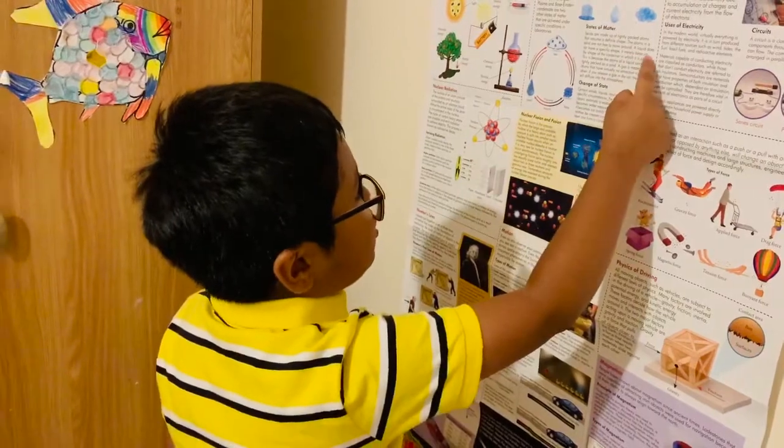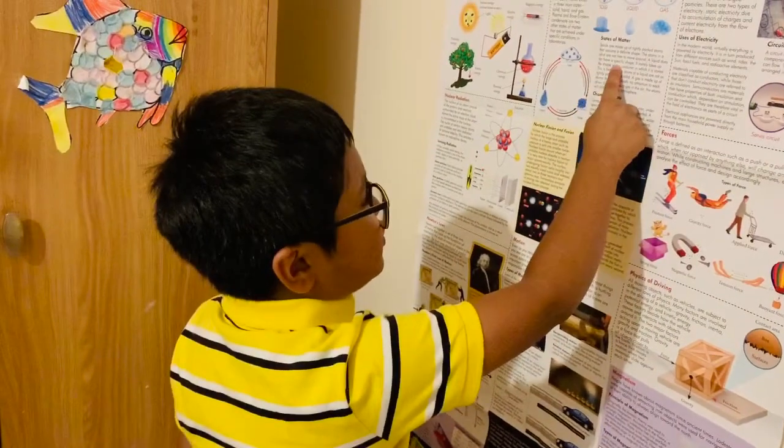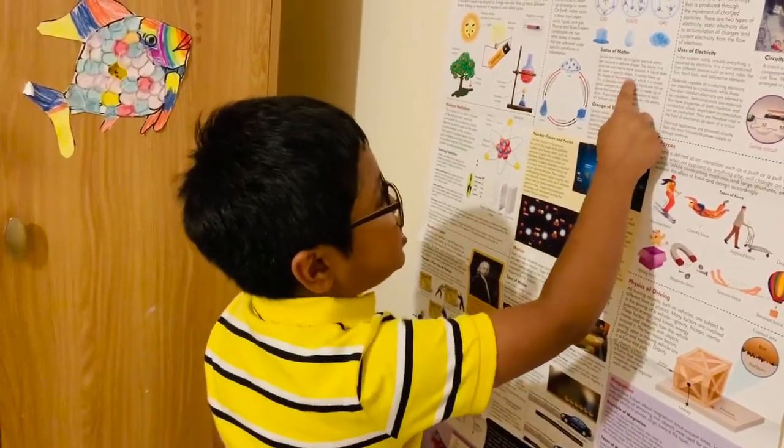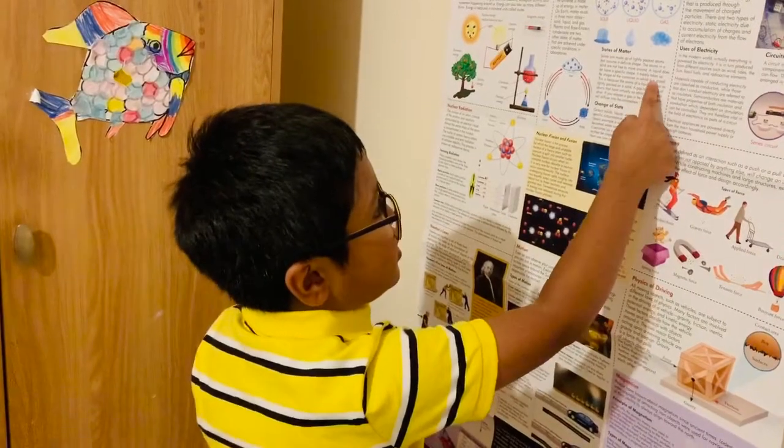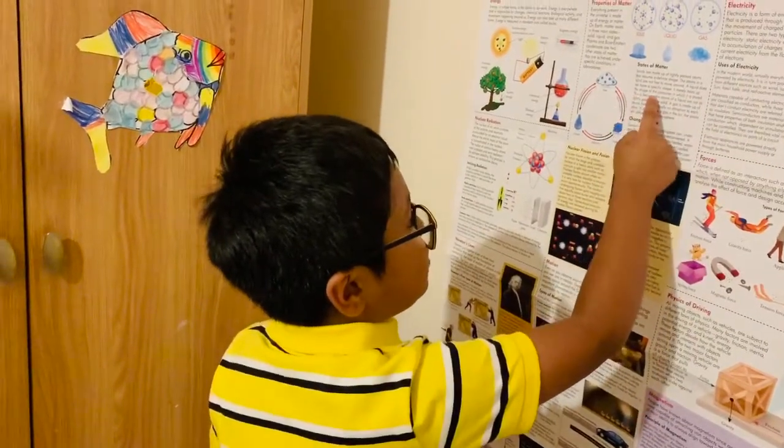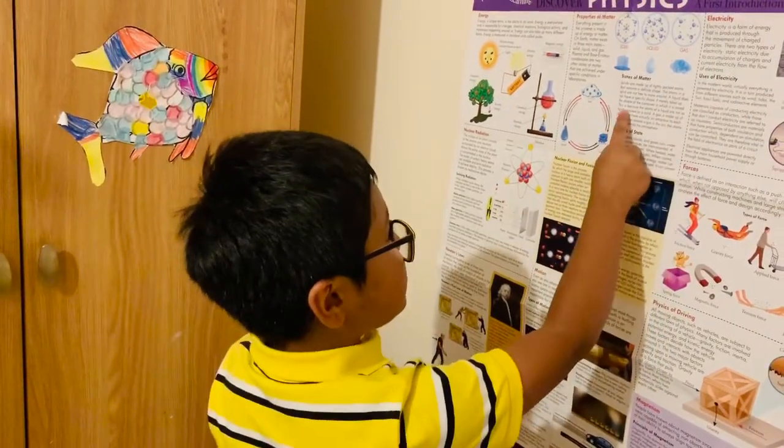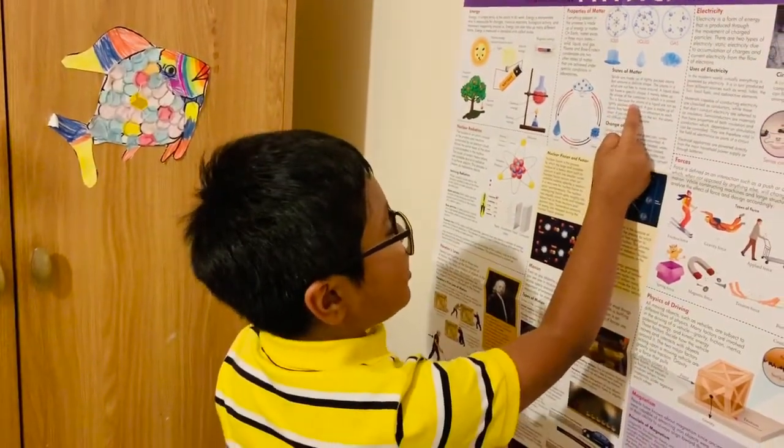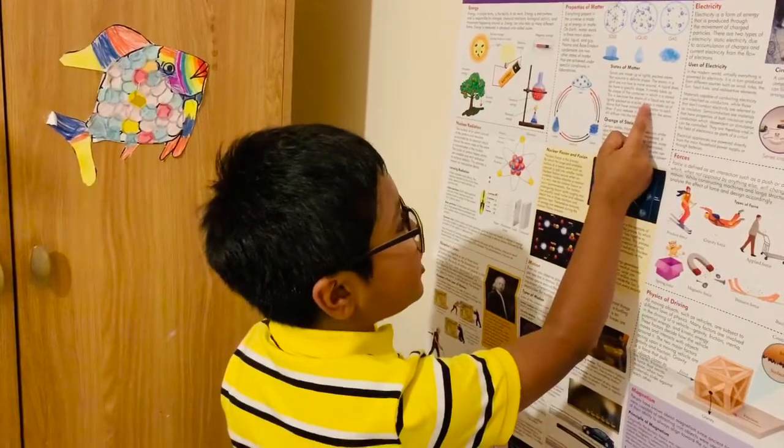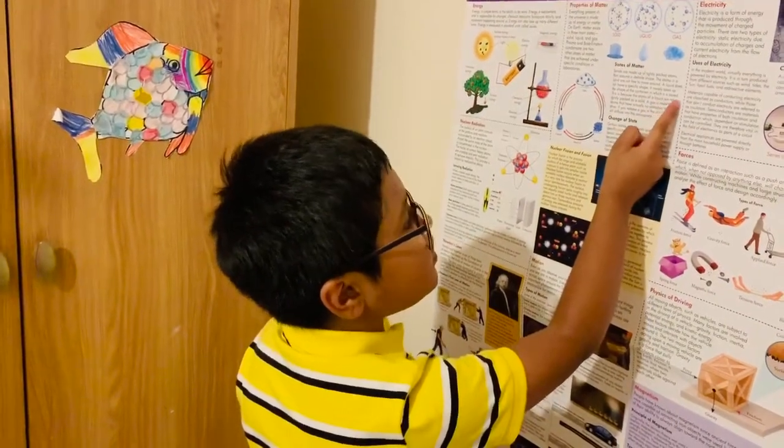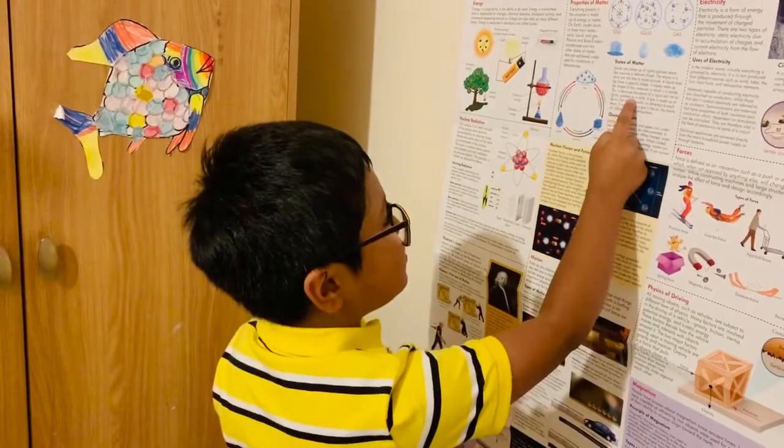A liquid does not have a specific shape. It merely takes up the shape of the container in which it is stored. This is because the atoms of a liquid are not as tightly packed as a solid.